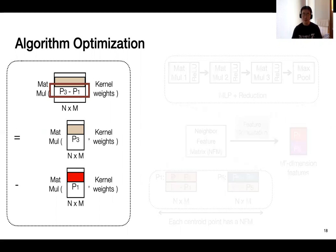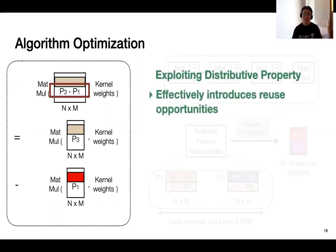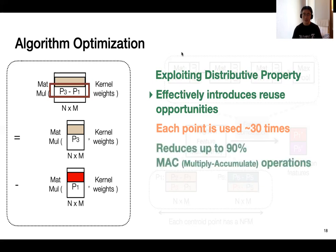So by exploiting this distributive property here, the benefit is tremendous. So first, it effectively introduces data reuse opportunities. And more specifically, in our example, the feature of P3 and P1 calculated can be used multiple times. And in real applications, we have found that each point is on average used for around 30 times. And with our optimization here, this directly translates to up to 90% of compute saving. What is more, it also eliminates the dependency between neighbor search and feature computation.